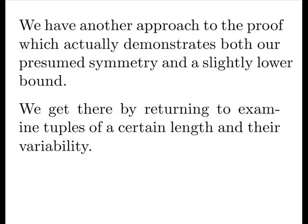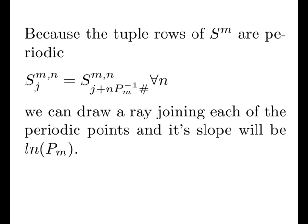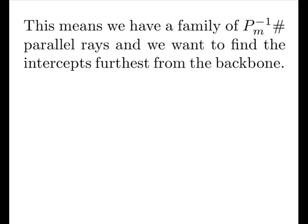We get there by returning to examining tuples of a certain length and the variability. Because the tuple rows of the S model are periodic, we can draw a ray joining each of the periodic points, and its slope will be the local average, the logarithm. This means we have a family of our first minor primordial parallel rays, and we want to find the intercepts furthest from the backbone.